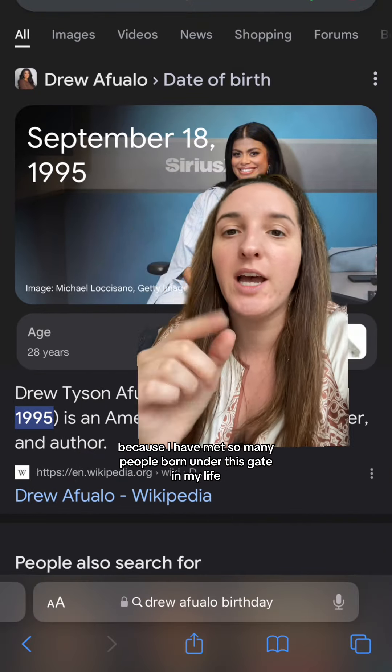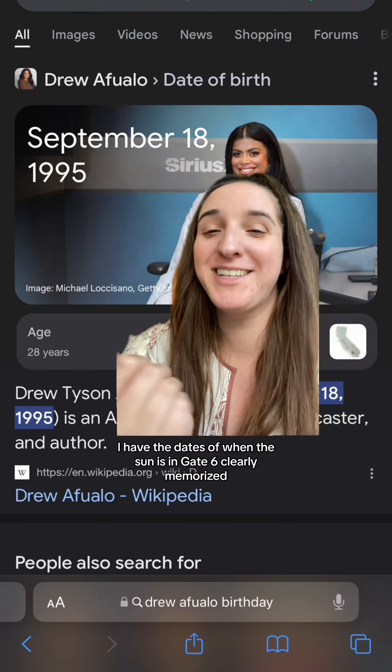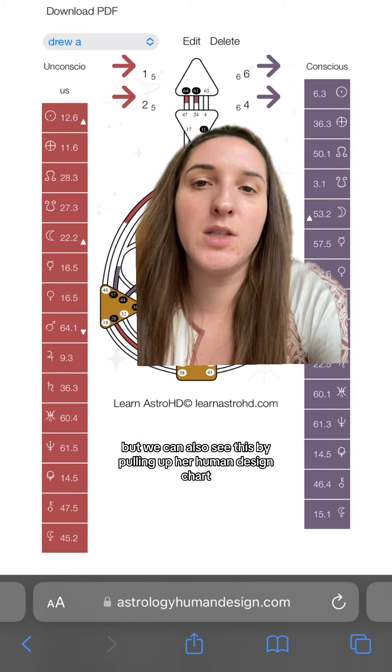Because I have met so many people born under this gate in my life, I have the dates of when the sun is in Gate 6 literally memorized. But we can also see this by pulling up her human design chart.